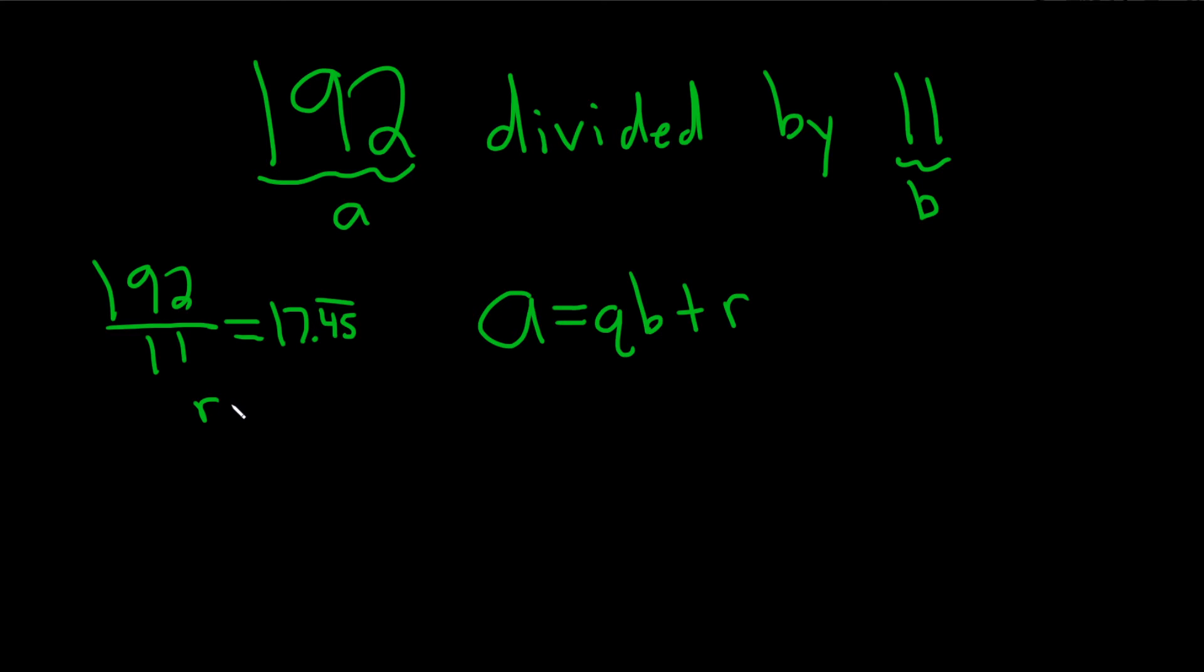So the next step is to round down. If you get a whole number, you're done. But if you get a decimal, you want to round down, no matter what, just round down. So that's going to give us 17.